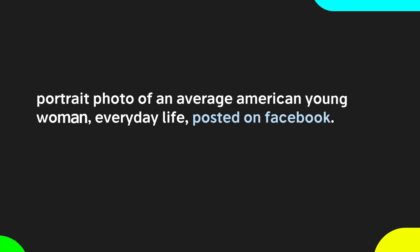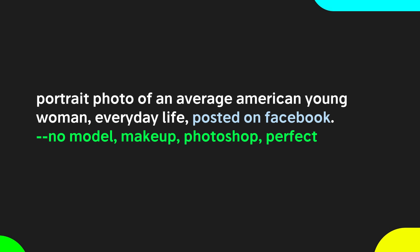First, let's start with a prompt like 'Portrait Photo of an Average American Young Woman, Everyday Life.' A place where people might post their day-to-day photos would be Facebook, so let's also add that. Most importantly, we need the negative prompt, accessed by using the dash-dash-no parameter. Here we'll write down all the stuff we don't want to see: words like model, makeup, Photoshop, and perfect.